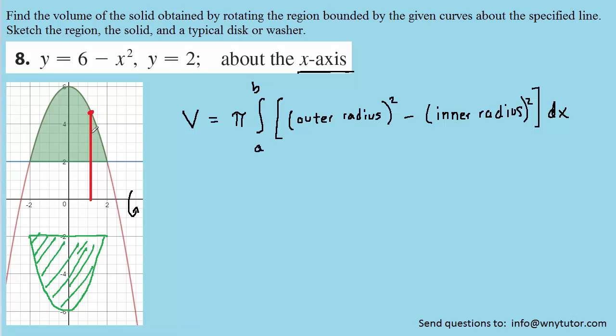It's measured in an up and down fashion, and therefore that would be a y value. However, we know that for the parabola, y is equal to six minus x squared. So when it comes time for the outer radius, what we're going to do is plug in six minus x squared for that outer radius.